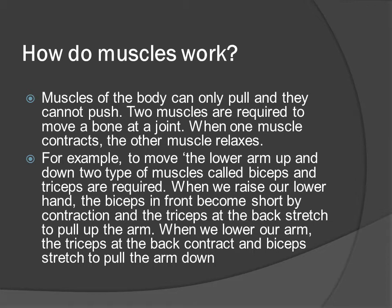Muscles of the body can only pull and they cannot push. Two muscles are required to move a bone at a joint. When one muscle contracts, the other muscle relaxes. For example, to move the lower arm up and down, two types of muscles called biceps and triceps are required. When we raise our lower hand, the biceps in front become short by contraction and the triceps at the back stretch to pull up the arm. When we lower our arm, the triceps at the back contract and the biceps stretch to pull the arm down.